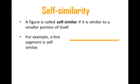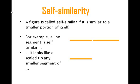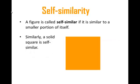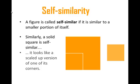The key definition we're going to need is what it means to be self-similar. A figure is self-similar if it's similar to a smaller portion of itself. For example, every line segment is self-similar — every line segment just looks like a scaled up version of a smaller line segment; in this case I've scaled it up by a factor of 2. Squares are also self-similar. The whole square looks like any chunk taken out of a corner. If I pull this piece out, I see that the big square is just a scaled up version of the small square by a factor of 2.